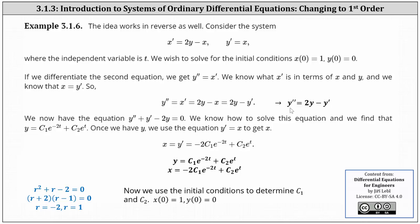We know how to solve this type of differential equation. Setting the right side equal to zero, we have y double prime plus y prime minus 2y equals zero, which we can solve using a characteristic equation. The corresponding characteristic equation is r squared plus r minus 2 equals zero, where the roots are r equals negative 2 or r equals 1. Because we have two distinct real roots, the general solution is y equals c1 e to the negative 2t plus c2 e to the t.